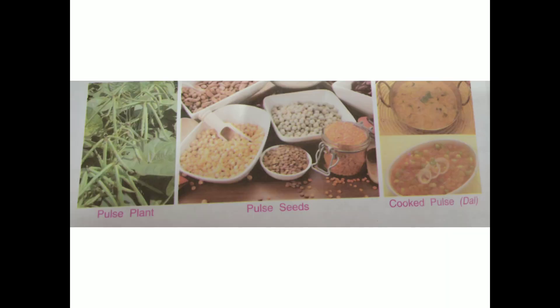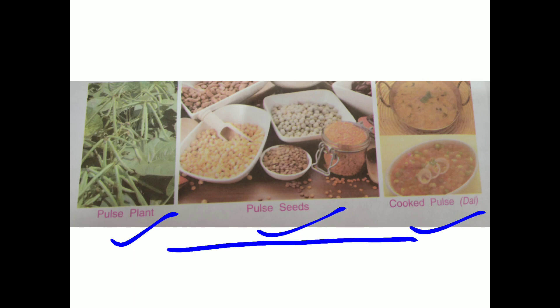Here, we are also using the seeds of plants. Like the pearl plant — these are the pearl seeds, and after cooking we get cooked pearls, which you call dal. So these are the seeds of pulses.